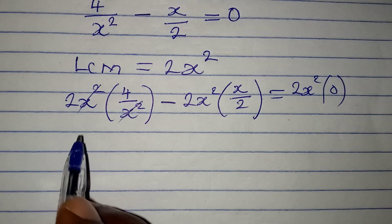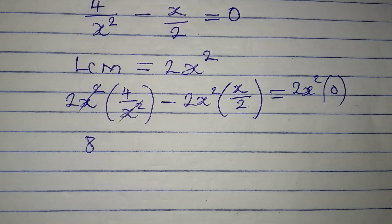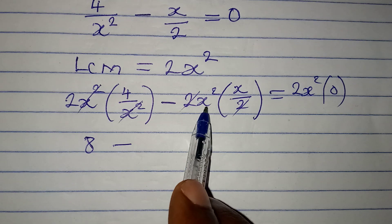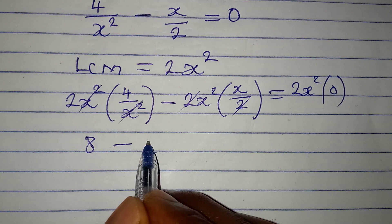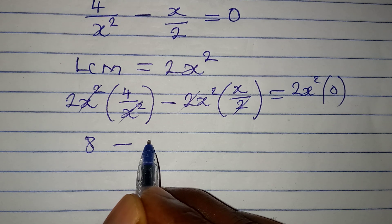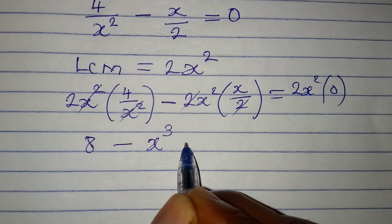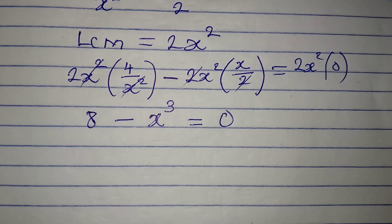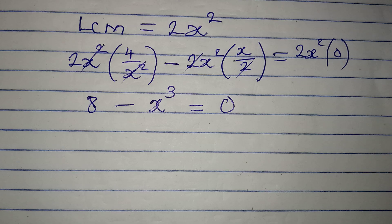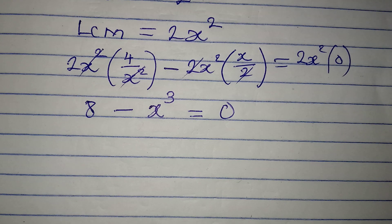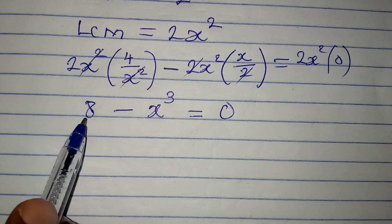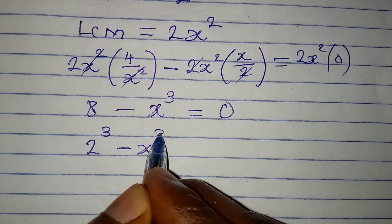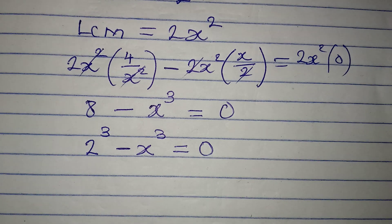x squared cancels here, giving us 2 times 4 which is 8. Then 2 cancels here, leaving x squared times x, which gives us x to the power of 3. So we have 8 minus x cubed equal to 0. Now we write 8 in index form as 2 to the power of 3.